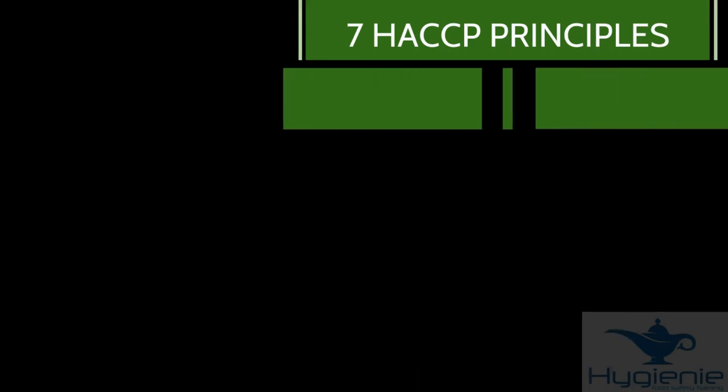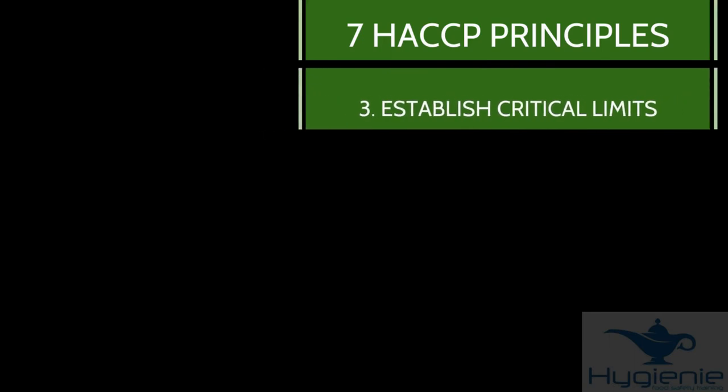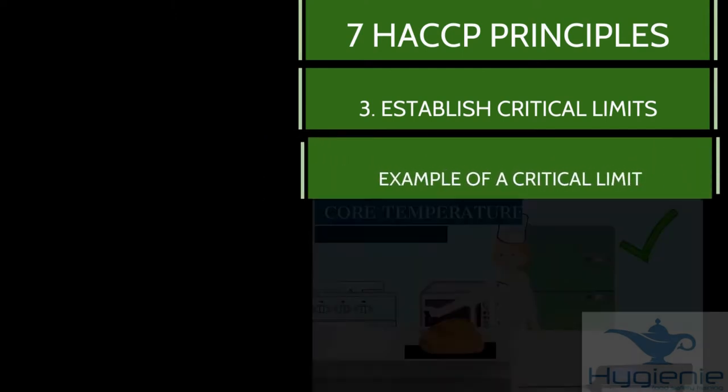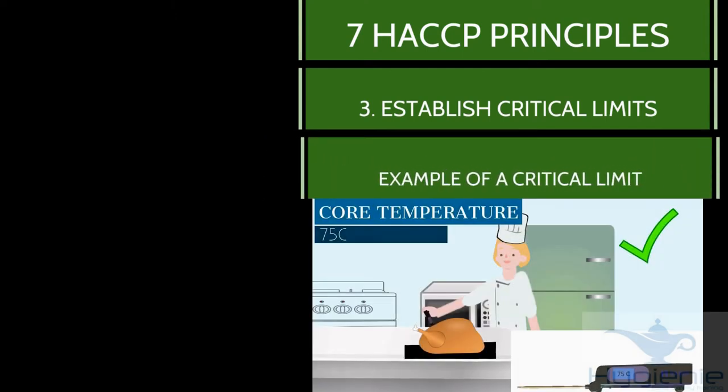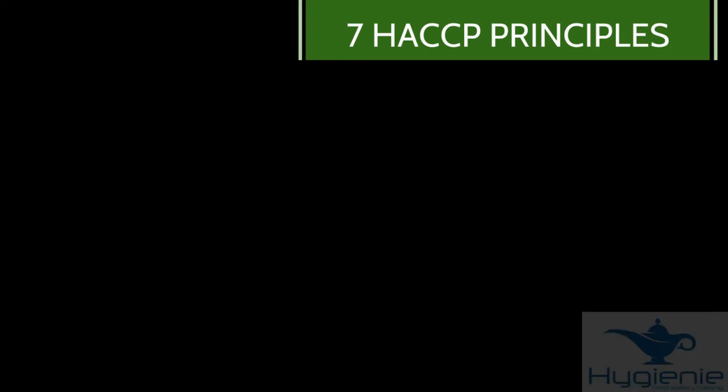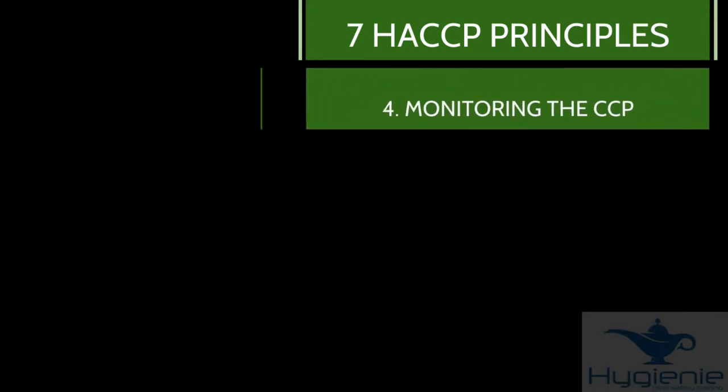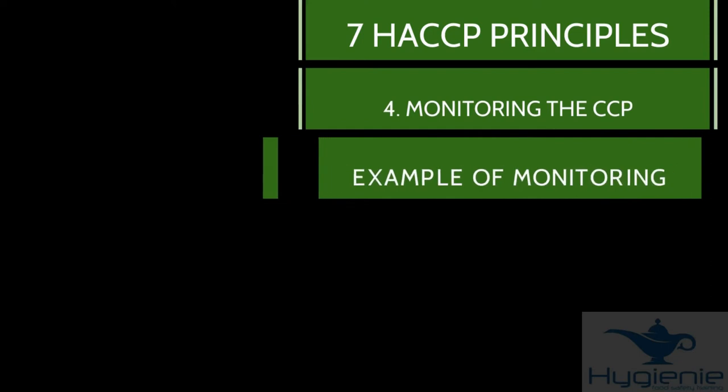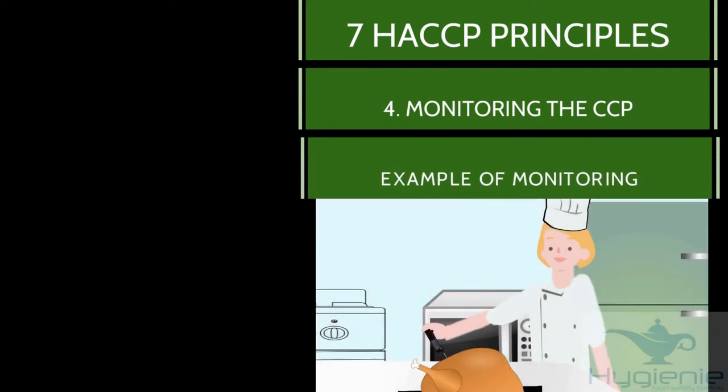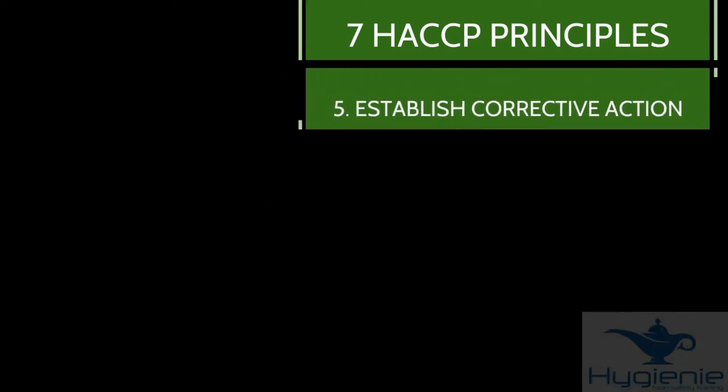Three, establish critical limits. This is the line between safe and unsafe. An example of a critical limit is 75 degrees C as a cooking temperature. Number four, monitoring the CCP. An example of monitoring is probing the food. Five is corrective action, for example cooking it some more.